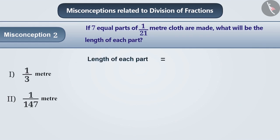To find the length of each part, the total length has to be divided by the number of parts. That is, 1 by 21 has to be divided by 7.